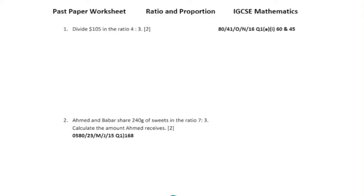Today we're discussing ratios and proportions, which is worksheet number 7 on page number 31, starting with question number 1: divide $105 in the ratio 4:3.